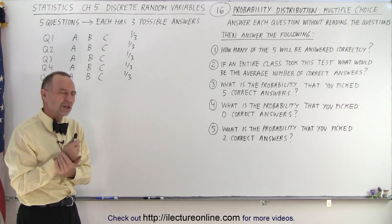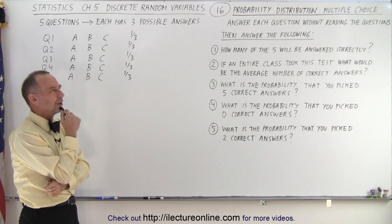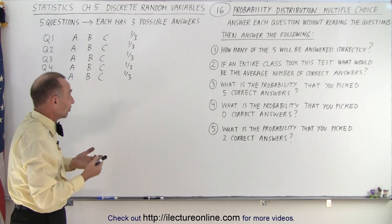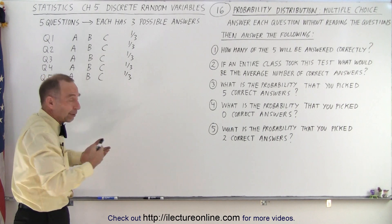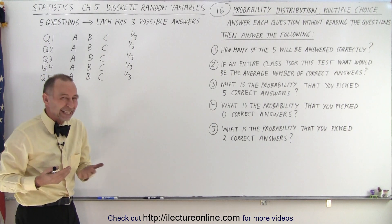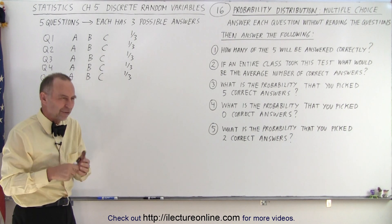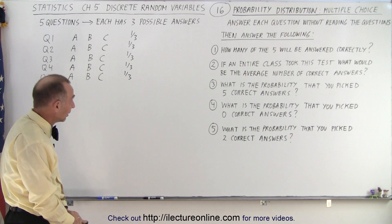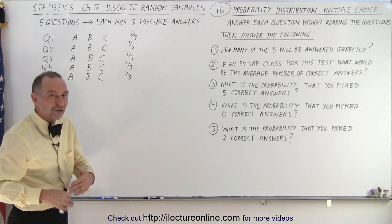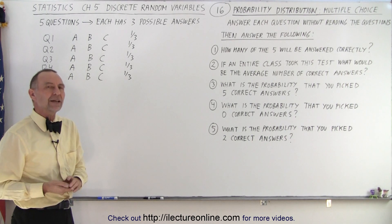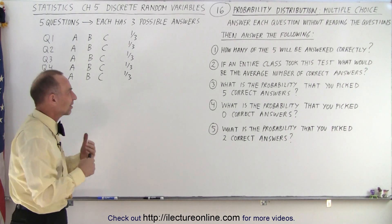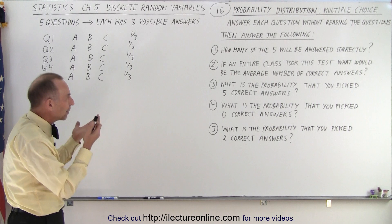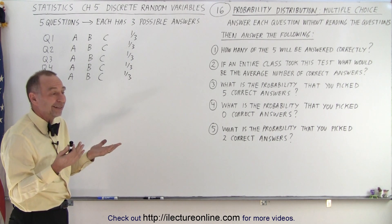But that's kind of strange, because you can't have a decimal number of correct answers. It's either zero, one, two, three, four, or five. It can't be five over three, which is essentially 1.67. You can't have a fractional correct answer, so it seems kind of odd to answer how many will be correct.